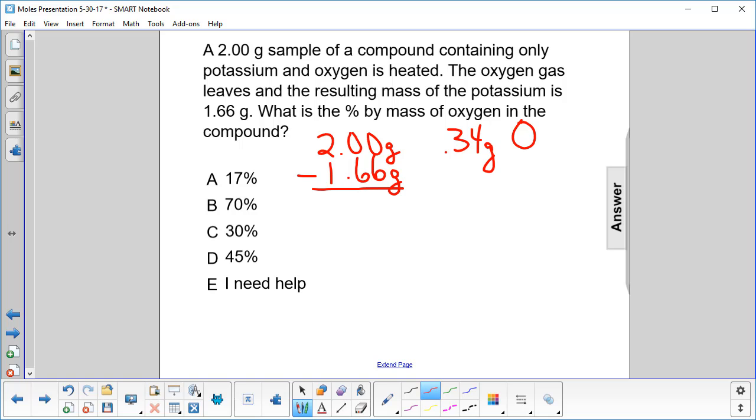We'll just write that with the O. So to find the percent by mass of oxygen, that's going to equal the total amount of oxygen, which is 0.34 grams, divided by the total mass of the original sample, and then we have to multiply that by 100.